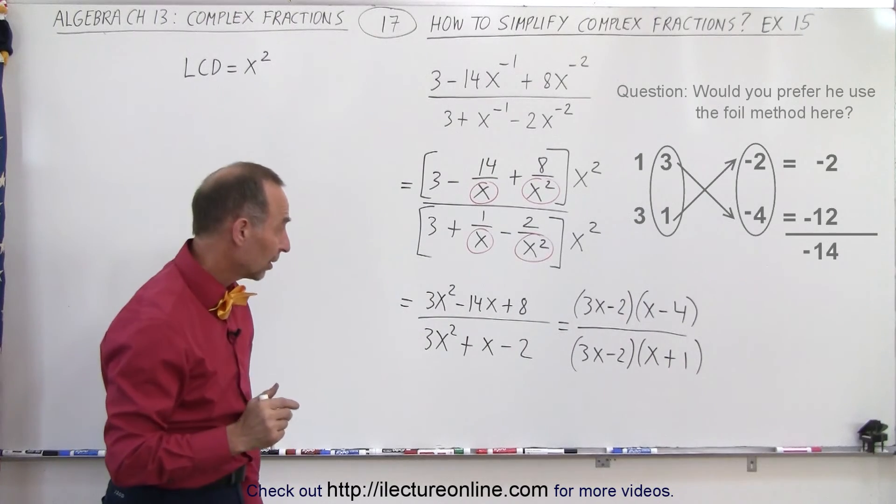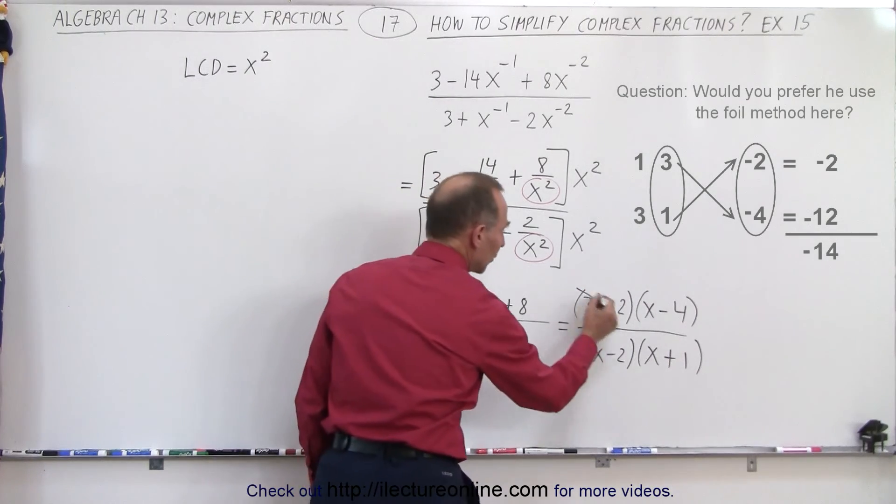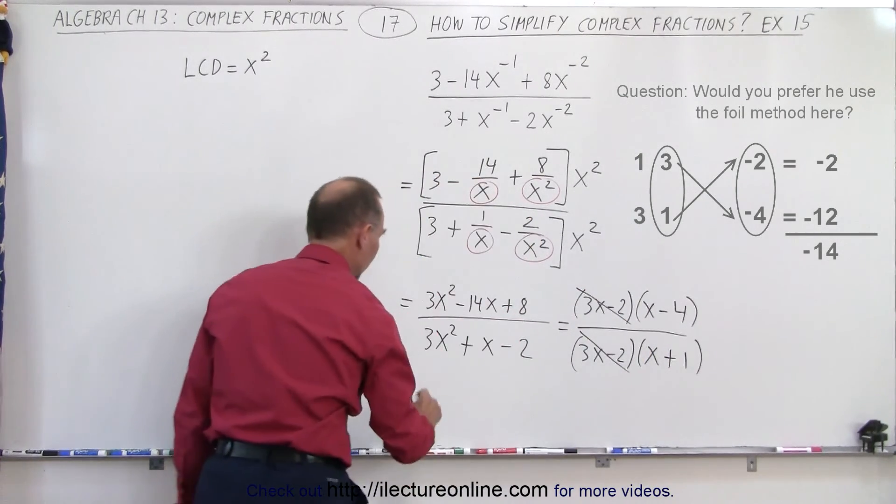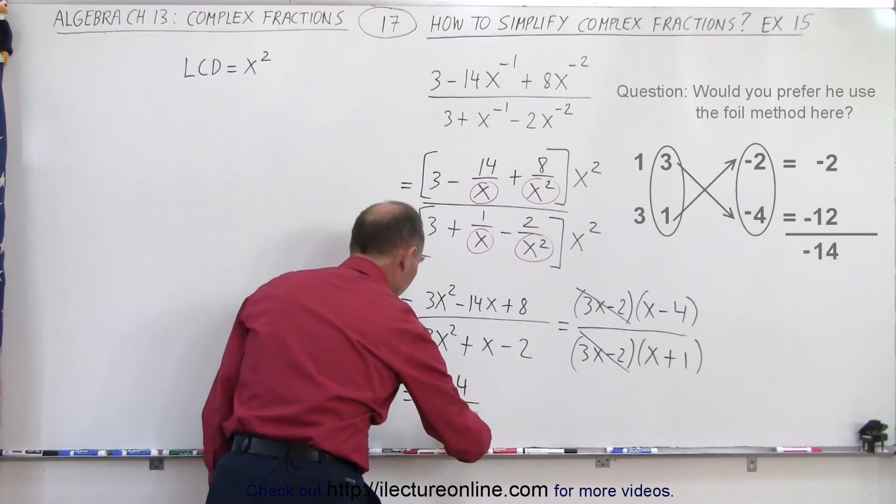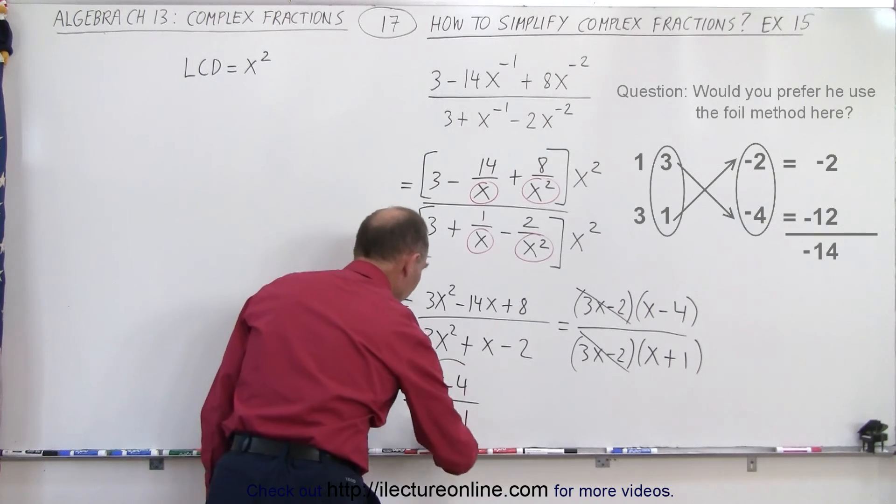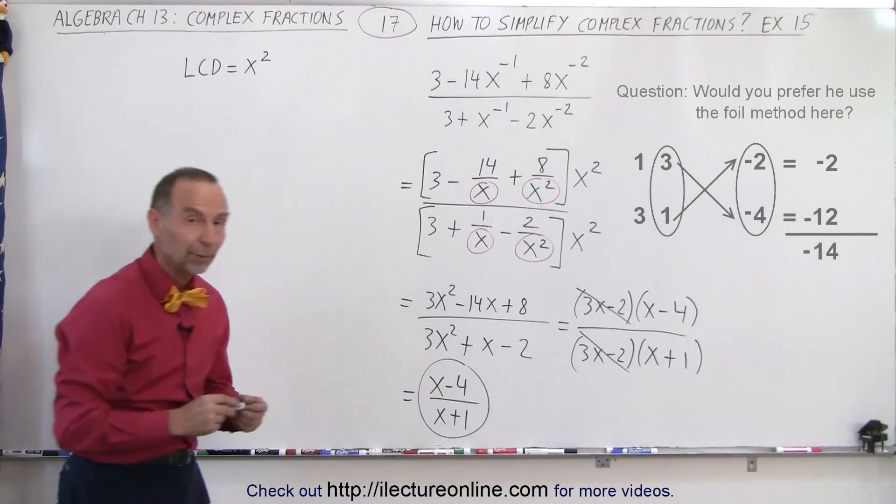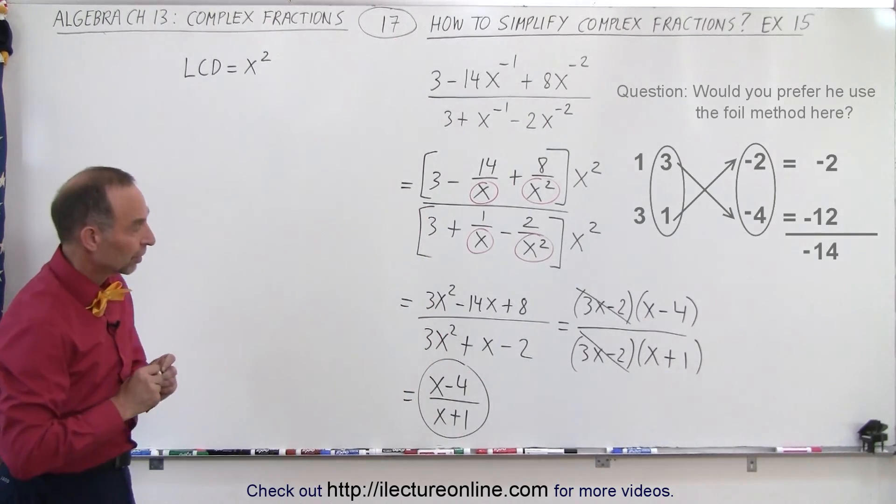Now, are some things, can we cancel them? Yes, we can. We have a 3x minus 2 and a 3x minus 2. And so finally, the final result is an x minus 4 divided by an x plus 1. And there's the final simplified form of our original equation.